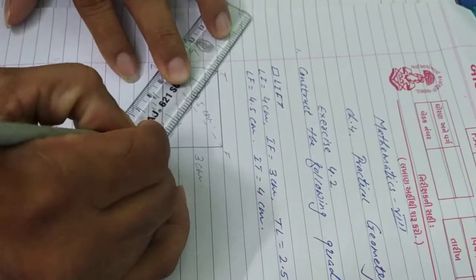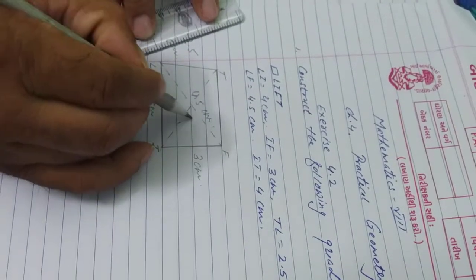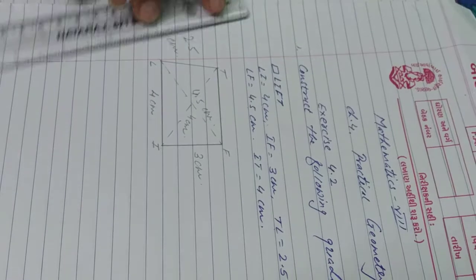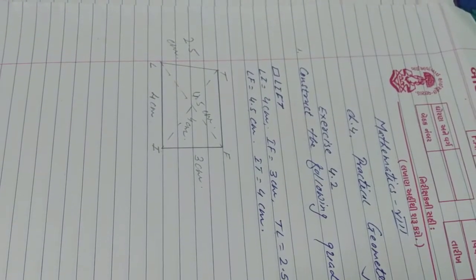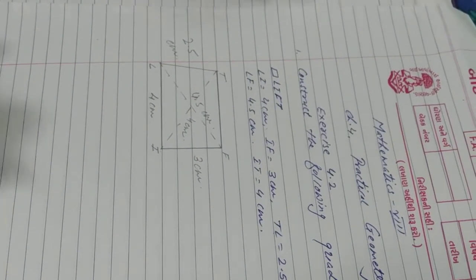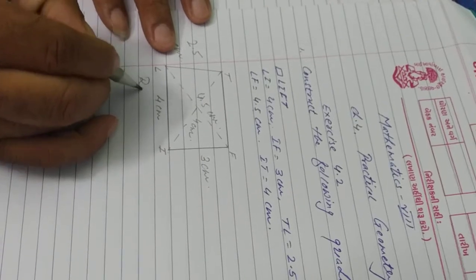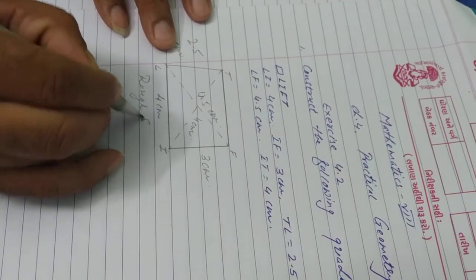From it we have to construct the given quadrilateral. So all of you understood about the rough sketch? What it is? Rough sketch.